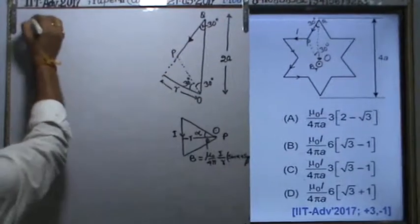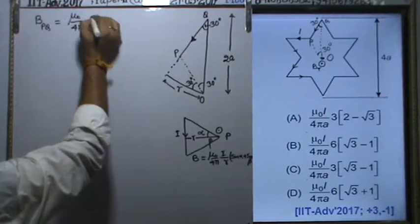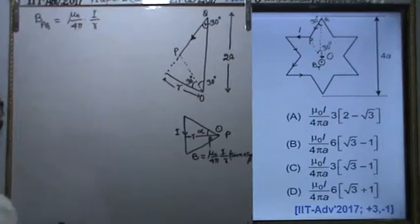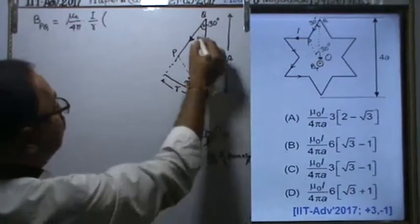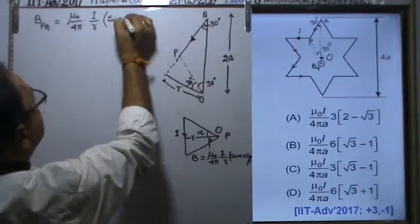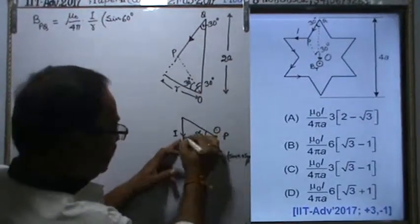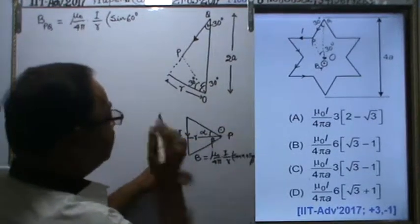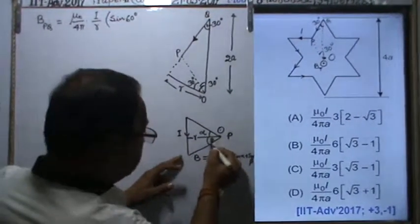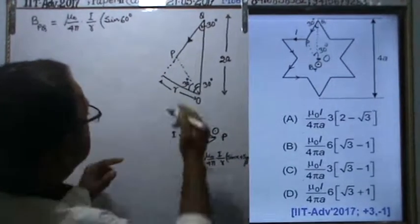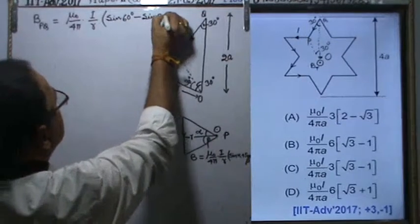The magnetic field due to PQ is: B = μ₀/4π × I/r × (sin α - sin β). For the upper angle, α is 60 degrees measured from this perpendicular line. This is sin 60 degrees. Beta is below and is 30 degrees, so it's minus sin 30 degrees.